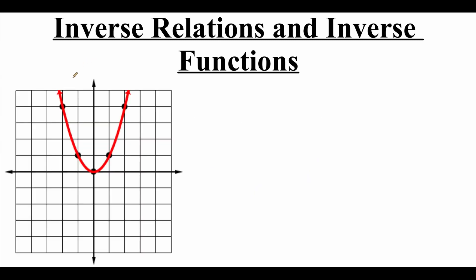Now we're going to focus on functions here. If we look at the graph of the function f of x equals x squared, we get this parabola graph, and I've got some points highlighted on it. So here we've got a point at the origin, which is 0, 0. Then we've got a point at 1, 1, and then a point at 2, 4. And then on the left-hand side, we've got a point at negative 1, 1, and also at negative 2, 4.